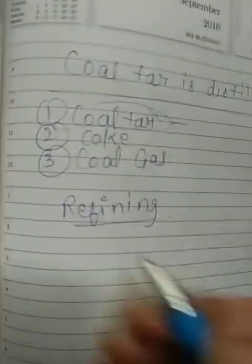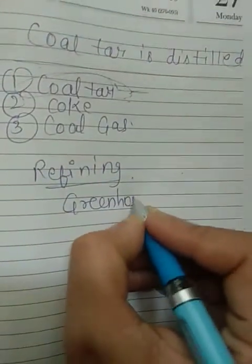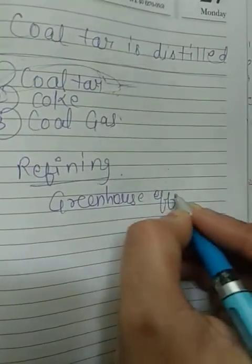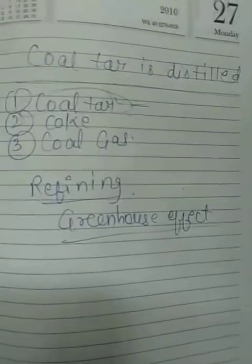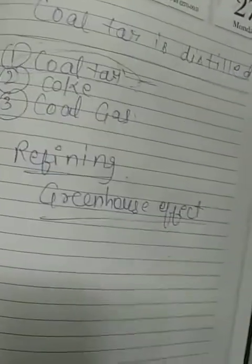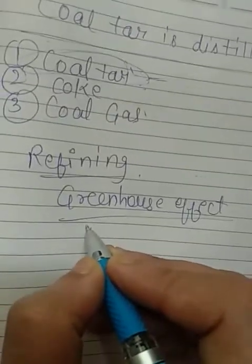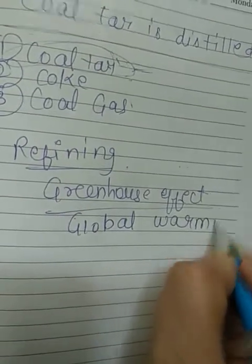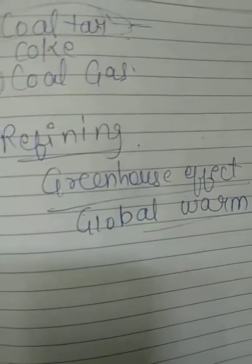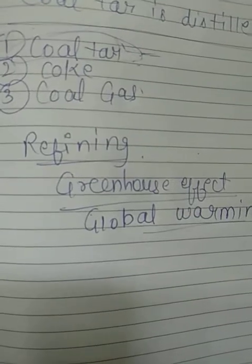Two important topics are greenhouse effect and global warming. The warming up of the atmosphere due to the trapping of infrared radiation by carbon dioxide gas is known as the greenhouse effect. The increasing temperature of the earth due to an increase in the concentration of CO₂ in the air is known as global warming. Students often confuse these two terms, so let's clarify the difference.